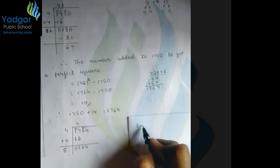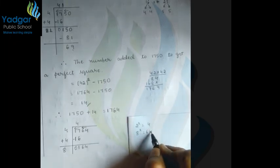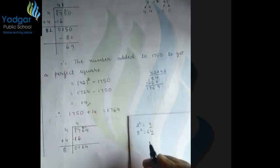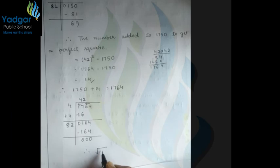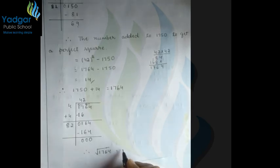At ones place, 4 is there. Which square number gives 4 at ones place? 2²=4 and 8²=64, both end in 4. Trying 82×2: 2×2=4, 8×2=16, giving 164. We got it! Subtracting 164 from 164 gives 0. Therefore, the square root of 1764 is equal to 42.